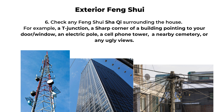Other common negative sha qi include the corner of a building from your neighbor that's pointing at your door or window — that's like an arrow pointing at you, and it will affect your health. If you are living in a big city, sometimes buildings have a lot of glass windows. The windows can reflect a lot of light, and that might create a light sha qi, so we try to avoid that too. Another one is an electricity pole, light pole, or even a cell phone tower — if you can see them directly in front of your house or outside your window, they can affect your health.